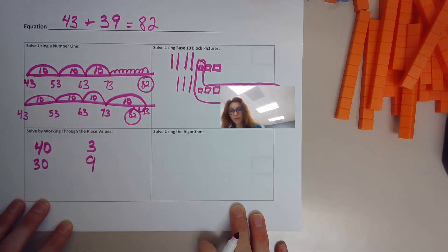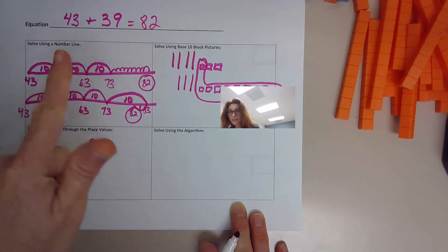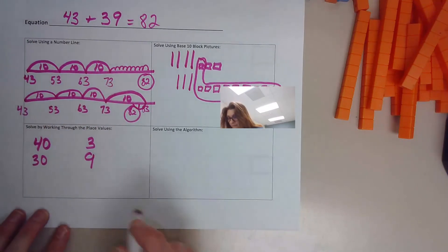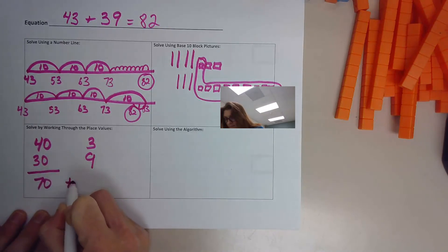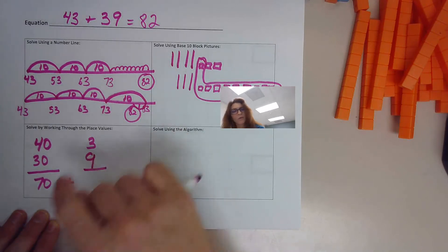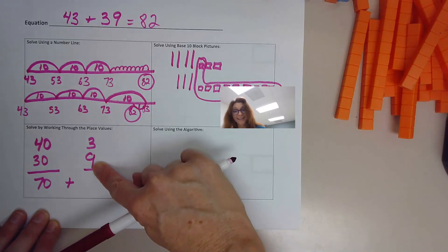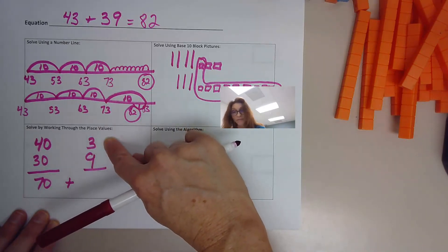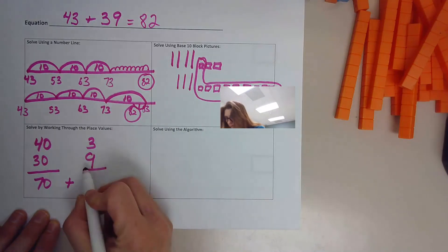39 is 30 and nine more. Now we want to put all those together. Well, 40 plus 30. We're at 40 and we add three more groups of 10, 50, 60, 70 plus three plus nine, or working smarter, not harder. Start at your larger number, nine plus three. We're at nine, 10, 11, 12. Oh,